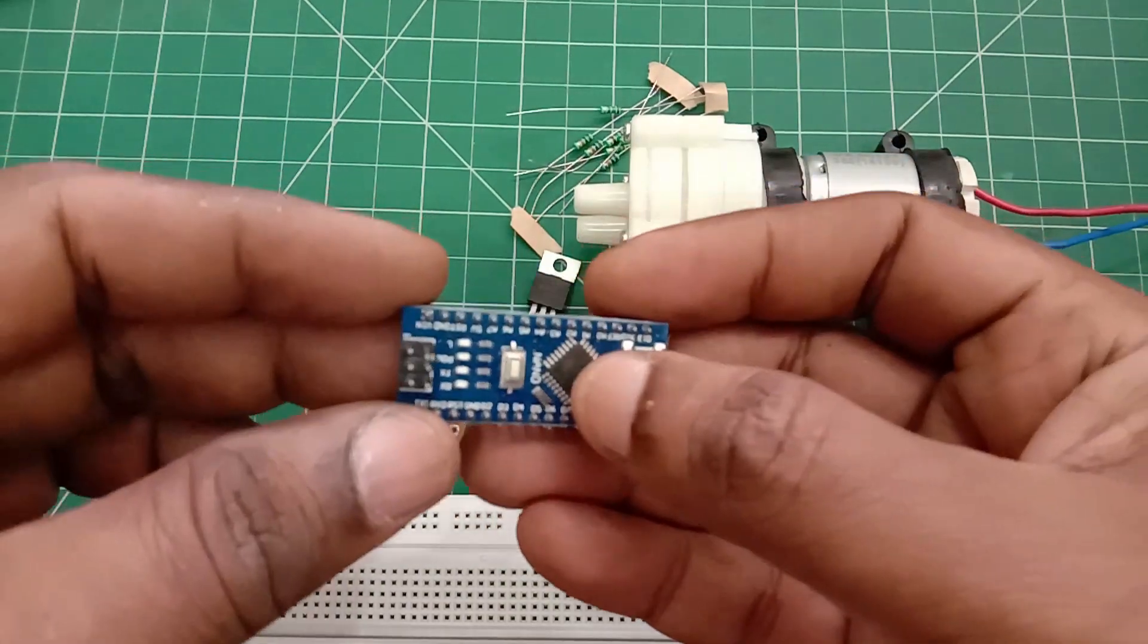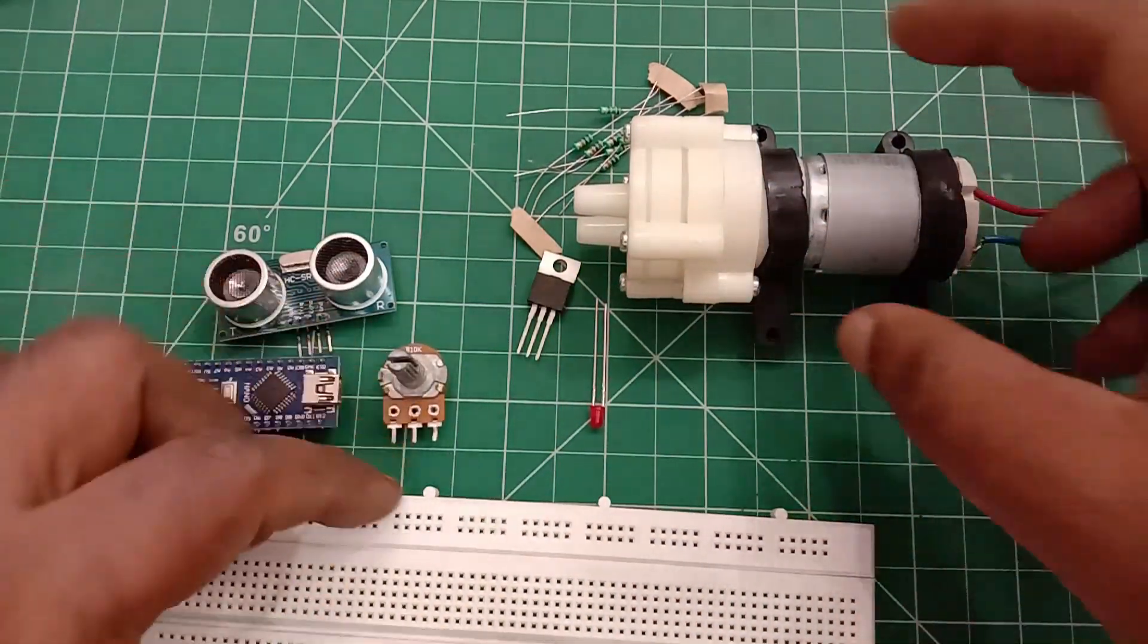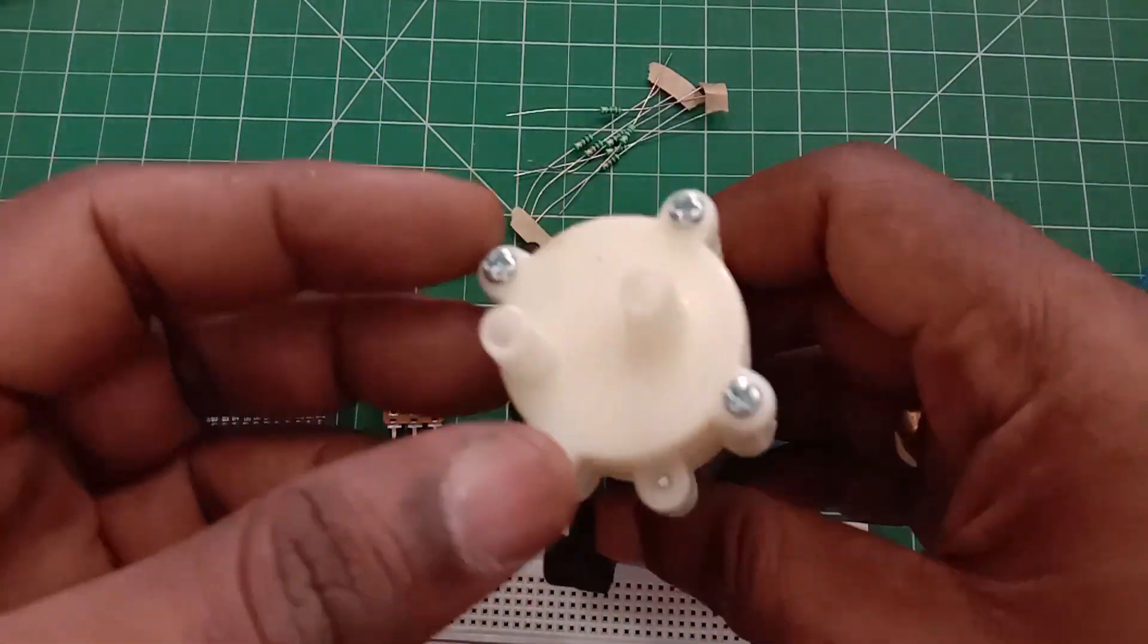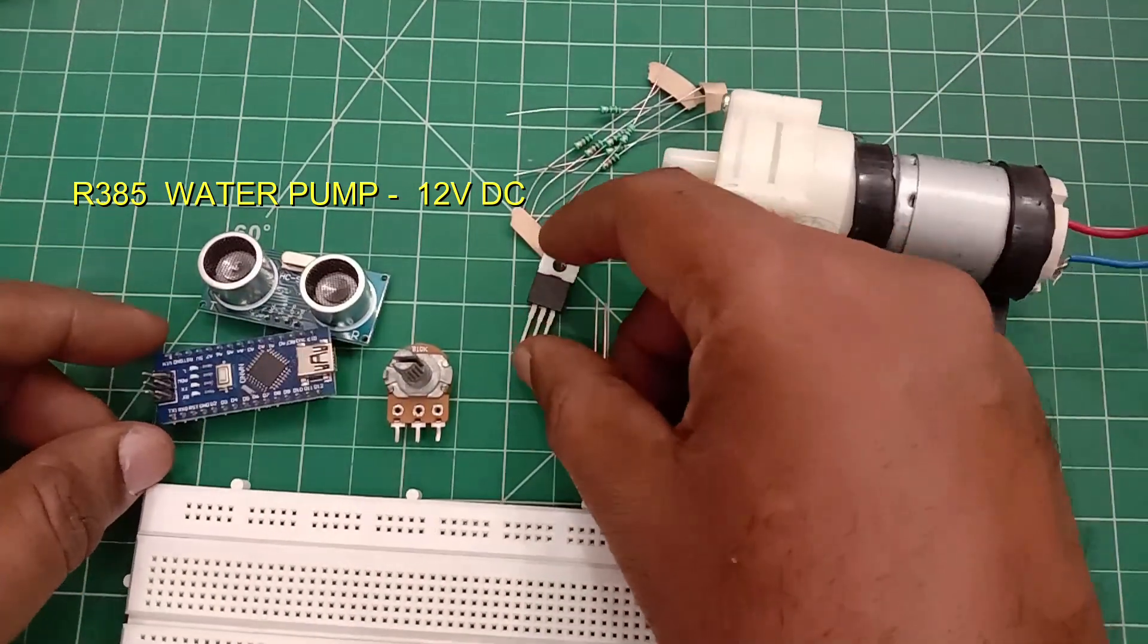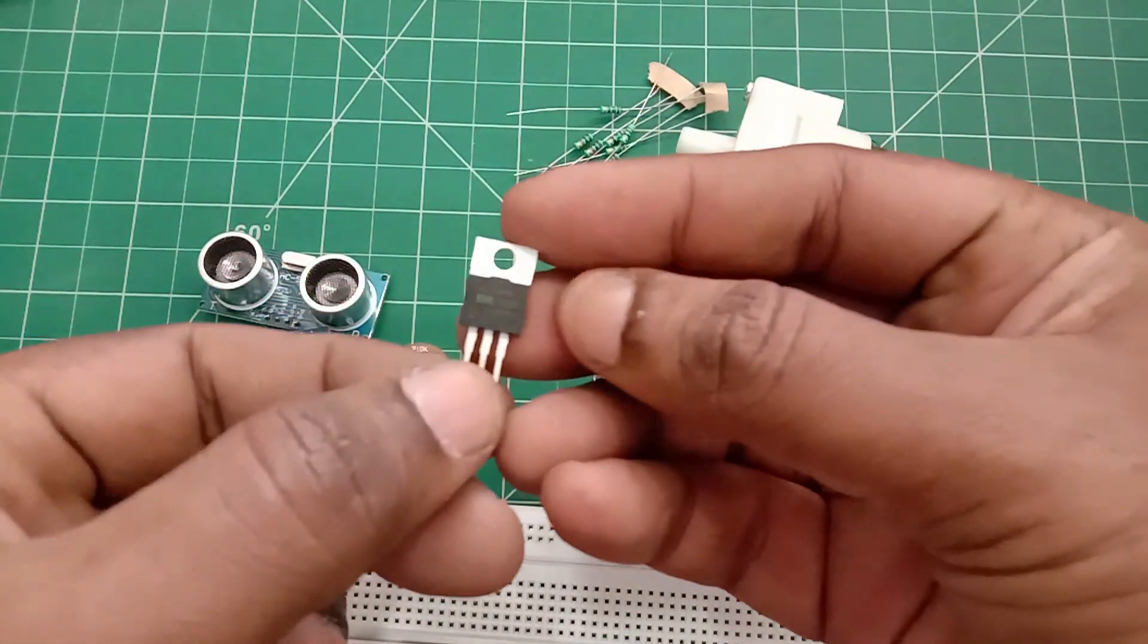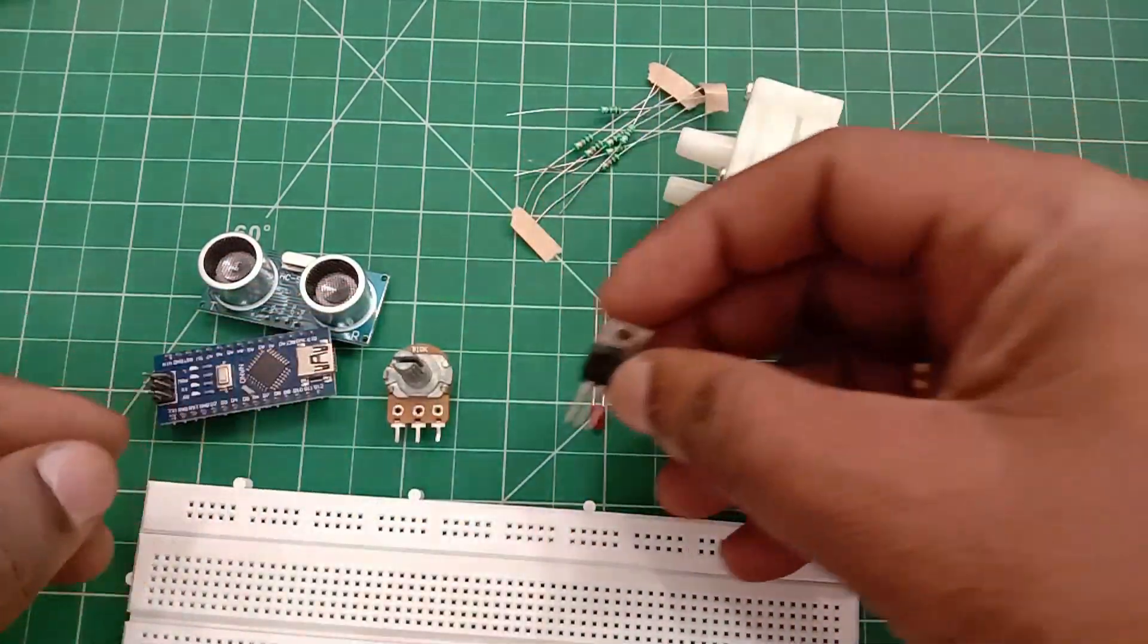The water pump used is R385 type, that is a diaphragm pump which works on 12 volt DC. For driving this motor we require an N-channel MOSFET 55NF06.